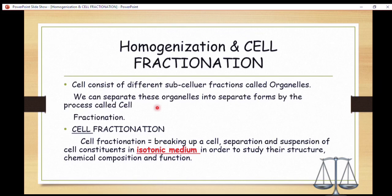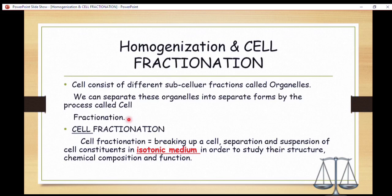A cell consists of different subcellular fractions called organelles. Normally, a cell has many organelles and these organelles perform various functions. These organelles can be identified or separated from the whole cell by the process called cell fractionation. After cell fractionation, we will dive into marker enzymes and see how they help identify the presence or absence of a particular organelle.